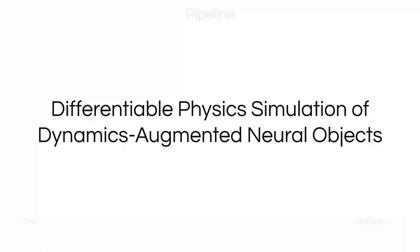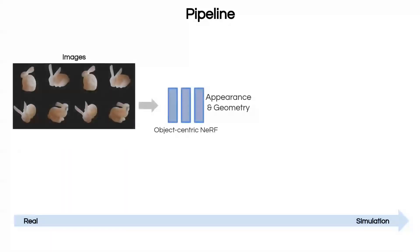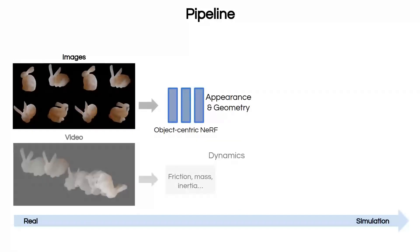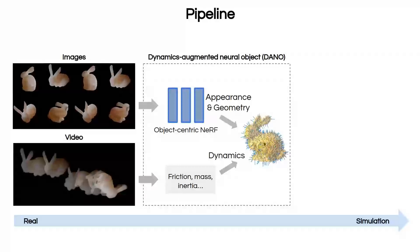We start off by presenting the real-to-simulation pipeline for simulating the motion of neural objects. A neural object model, such as a NeRF, is trained from still images, and object trajectories are extracted from videos of the object in motion. Object mass and friction properties are computed and candidate surface points and normals are sampled to produce a Dynamics Augmented Neural Object.